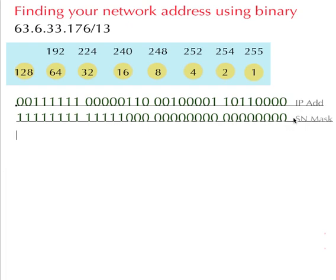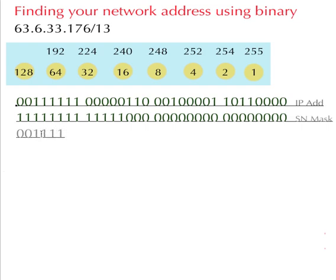What we're going to do now is work out a binary AND. A 1 and a 1 added together will give you a 1, and anything else added together will give you a 0. So 0 plus 1 will give you a 0. Next one along is a 0, then 1, 1, 1, 1, 1, 1, and then everything else is 0.